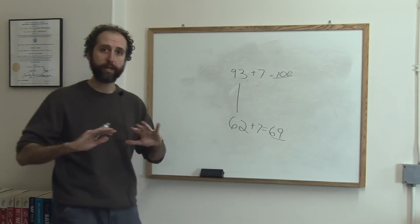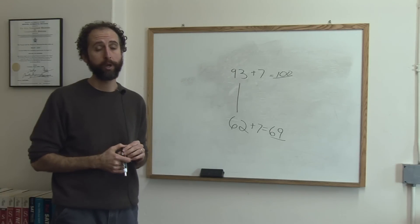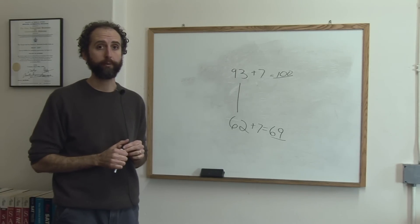So whoever does best in the class, by definition, is going to get 100 or a perfect score. That becomes the new 100. That's the first way to grade on a scale, on a curve.